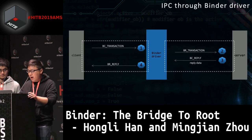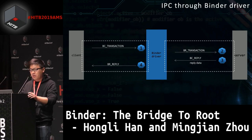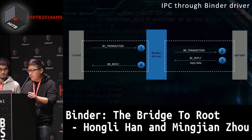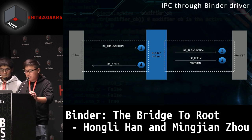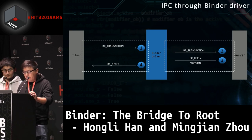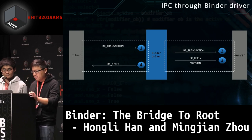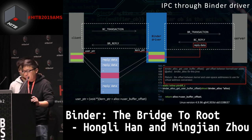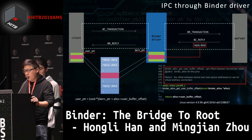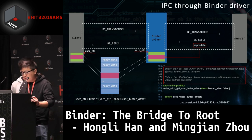Simply, there are four steps during Binder IPC. Step 1: the client sends the BC_TRANSACTION to the driver. Step 2: the server reads the BR_TRANSACTION from the driver. Step 3: the server sends the BC_REPLY to the driver. Step 4: the client reads the BR_REPLY from the driver. The client, the driver, and the server share the same physical memory.